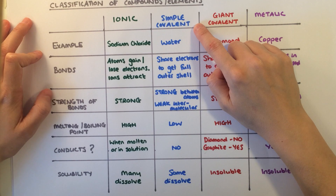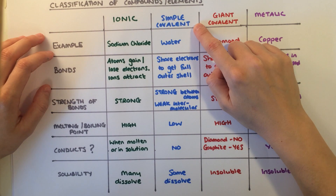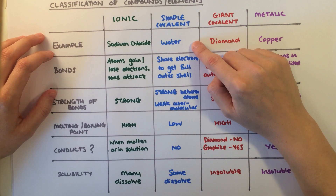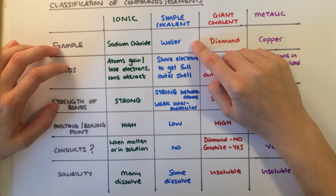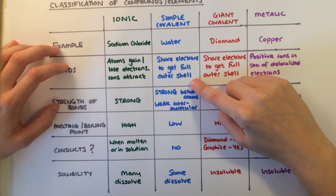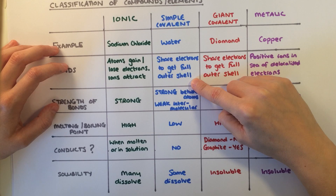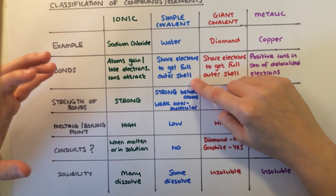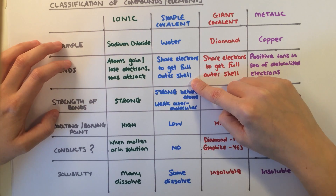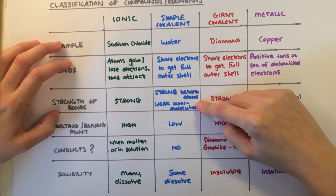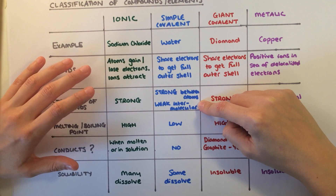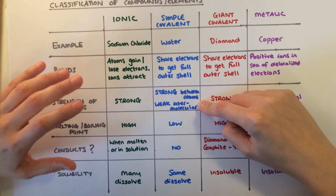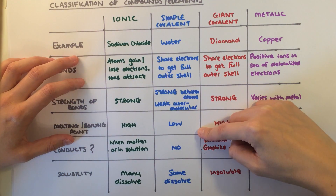Simple covalent molecular structures like water, carbon dioxide, and hydrogen form when atoms share electrons to fill their outer shells. There are really strong bonds between the individual atoms. However, there are weak intermolecular forces between the molecules, resulting in low melting points.